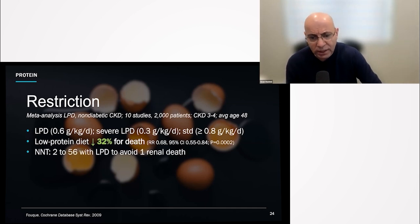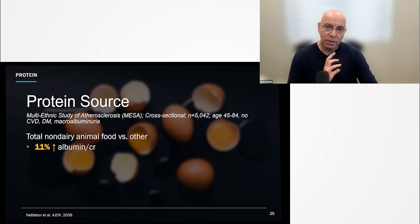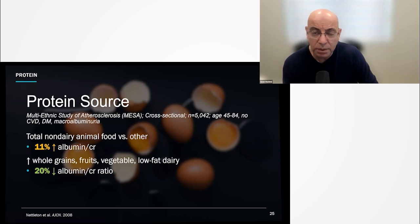Now, in this particular study, the number needed to treat was two to 56. In our clinical population, we see so many patients that we feel using lower protein diets is actually part of our strategy, and using protein sources that are specifically plant-based. We find that the more animal-based sources they eat, the more protein they spill, versus the more plant-based sources they eat, the less protein they spill.